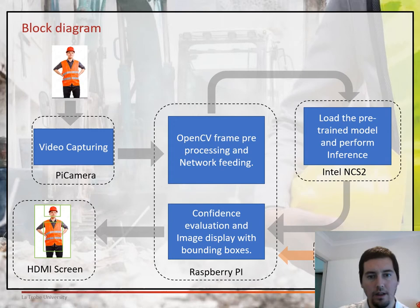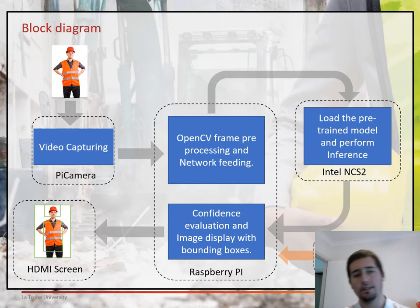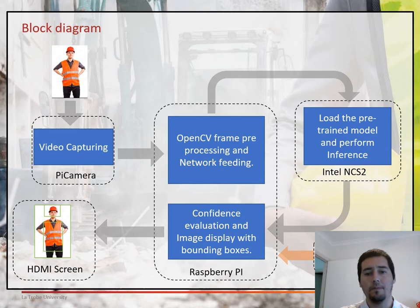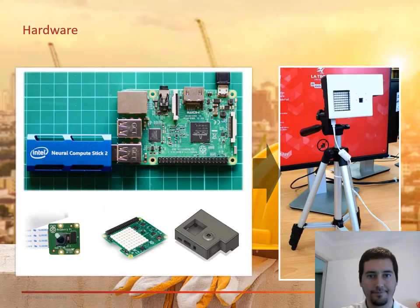On this slide, we can see the block diagram of my project. We can see that the Raspberry Pi camera takes a frame from the construction site. The Raspberry Pi uses OpenCV to process those images and feed the neural network on the Intel Neural Compute Stick, where the inference is performed. Then the Raspberry Pi computes and evaluates all the output from the inference and gives the bounding boxes for the object detection.